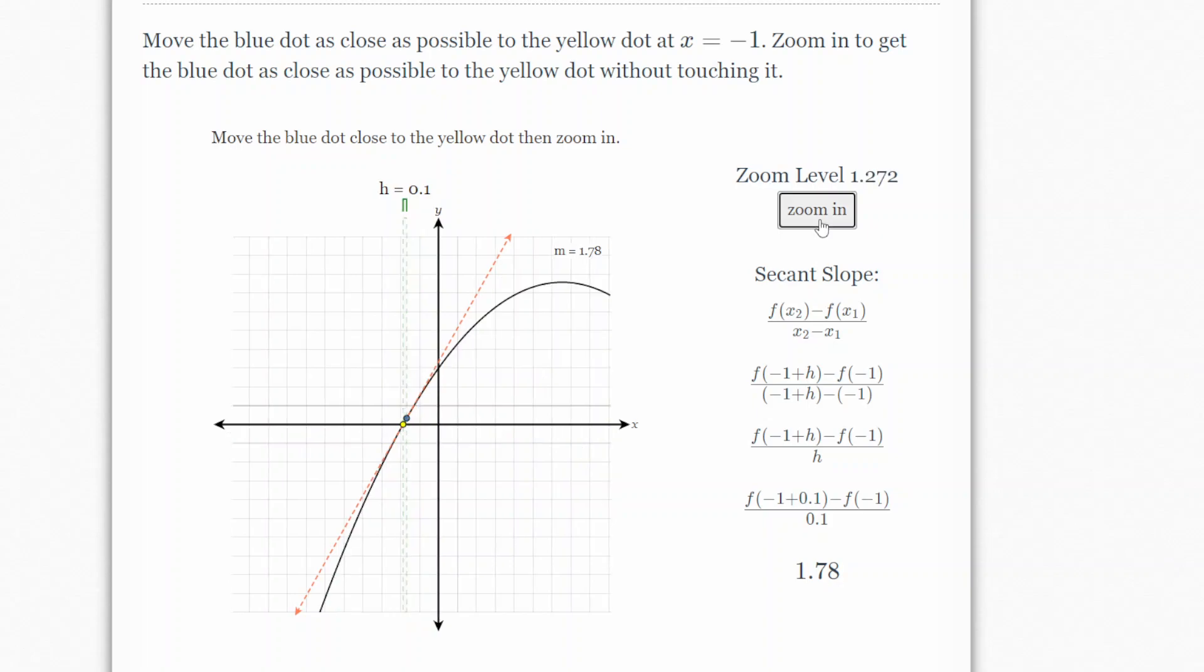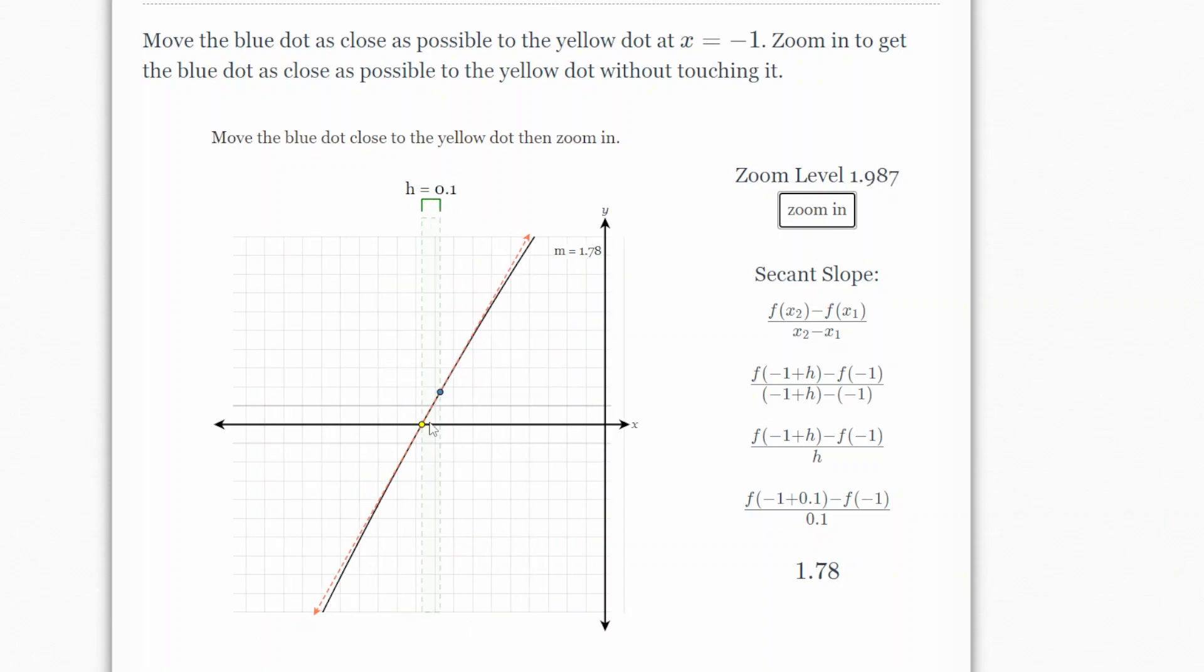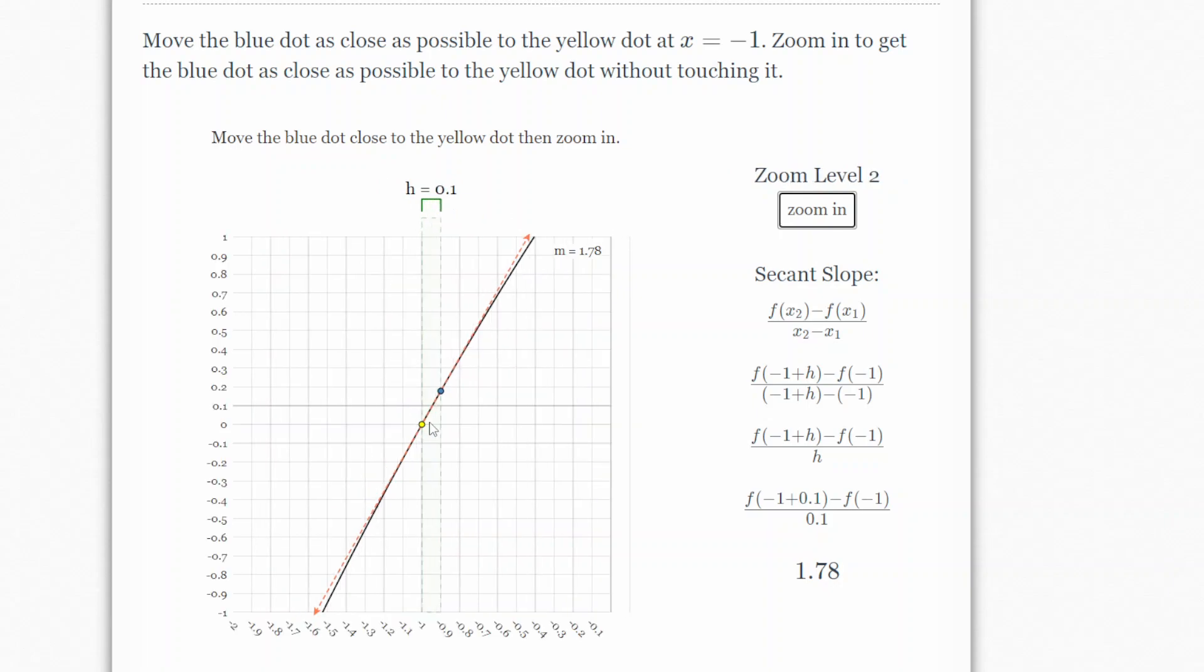So you zoom in. And then what it's doing is literally zooming in like you have on Desmos or something where you want to see. Now look, we're in tenths. Now you want to do it again to where we're making h even closer. So now we're a hundredth of a point away from the yellow.